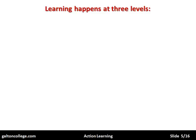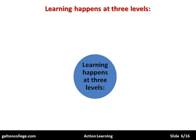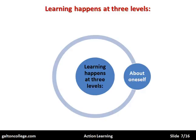Now, learning happens at three levels, and that's what we're going to cover in this video. The first level is that we learn about ourselves. We're engaged in a problem — a life problem, how to fix something or how to do something that impacts on our lives. So we're learning about our approach to solving the problem, and how we bring our resources, abilities, talents, and skills to bear on solving it.